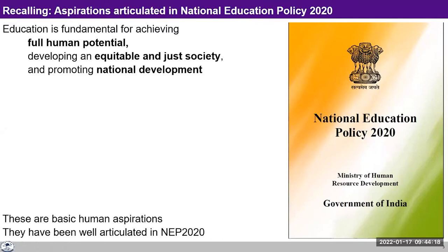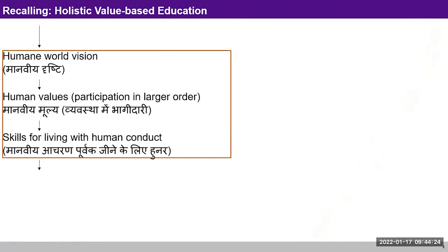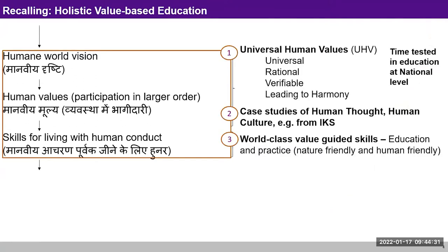The model for holistic value-based education contains three parts. One is the development of a humane world vision, and universal human values is something that can help to do that. The second part is the case studies of human thought, human culture, and we have very good examples from the Indian knowledge system. The third part is world-class value-guided skills — education and practice of nature-friendly and human-friendly skills.